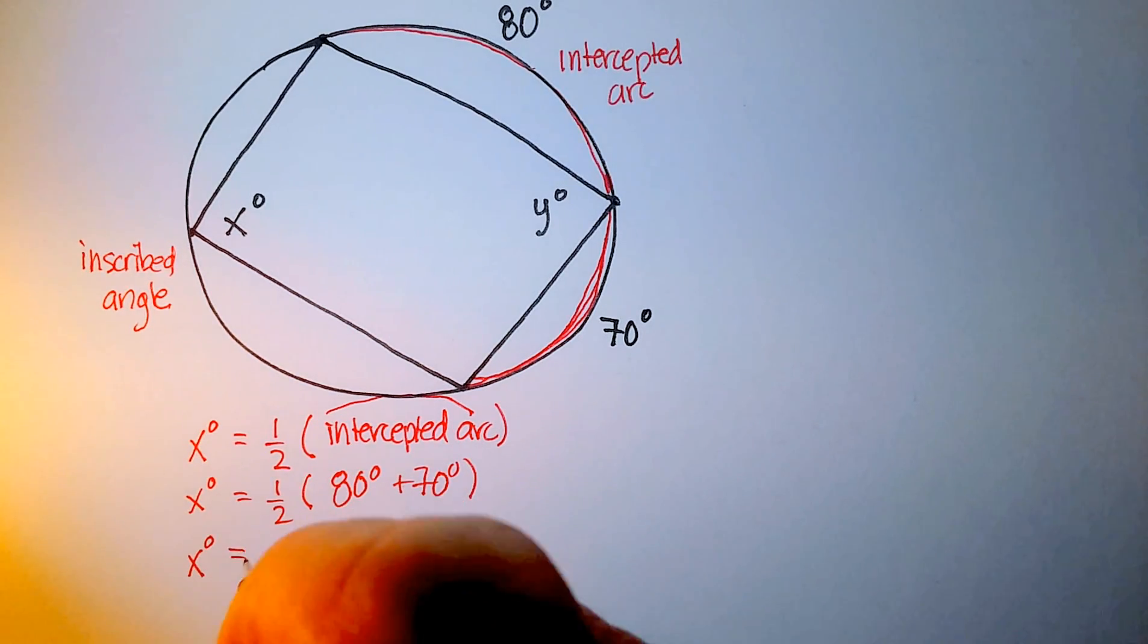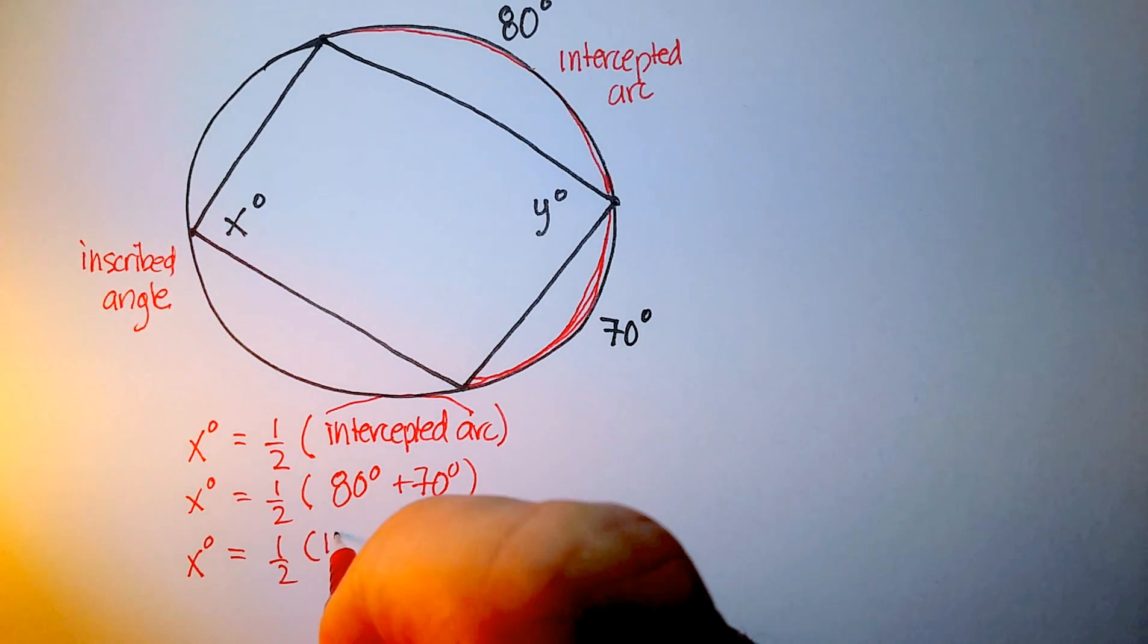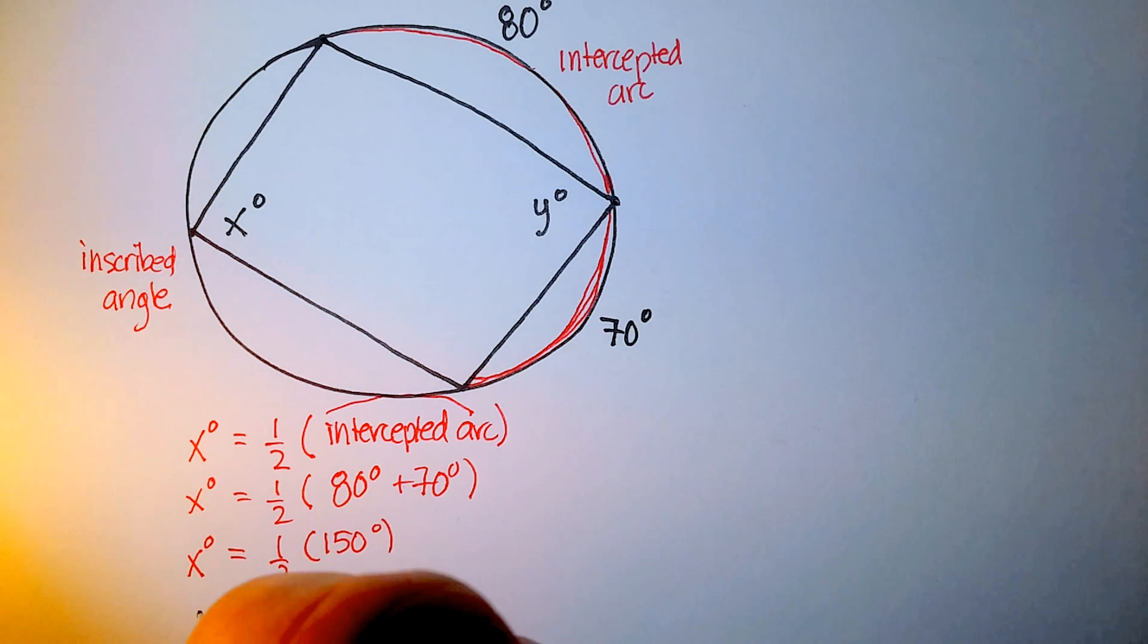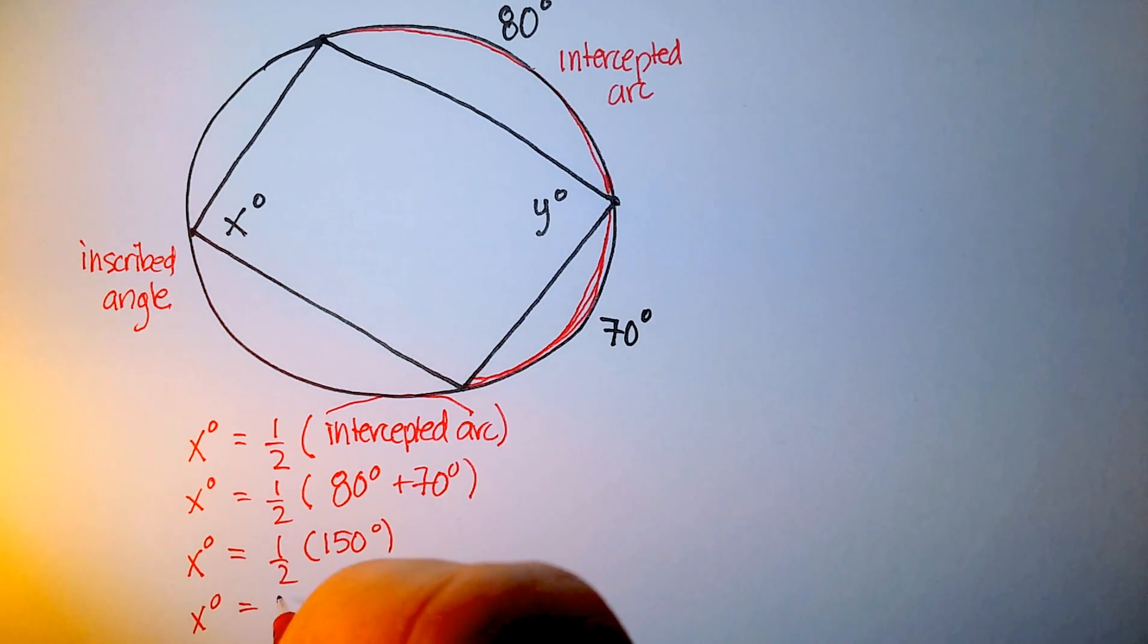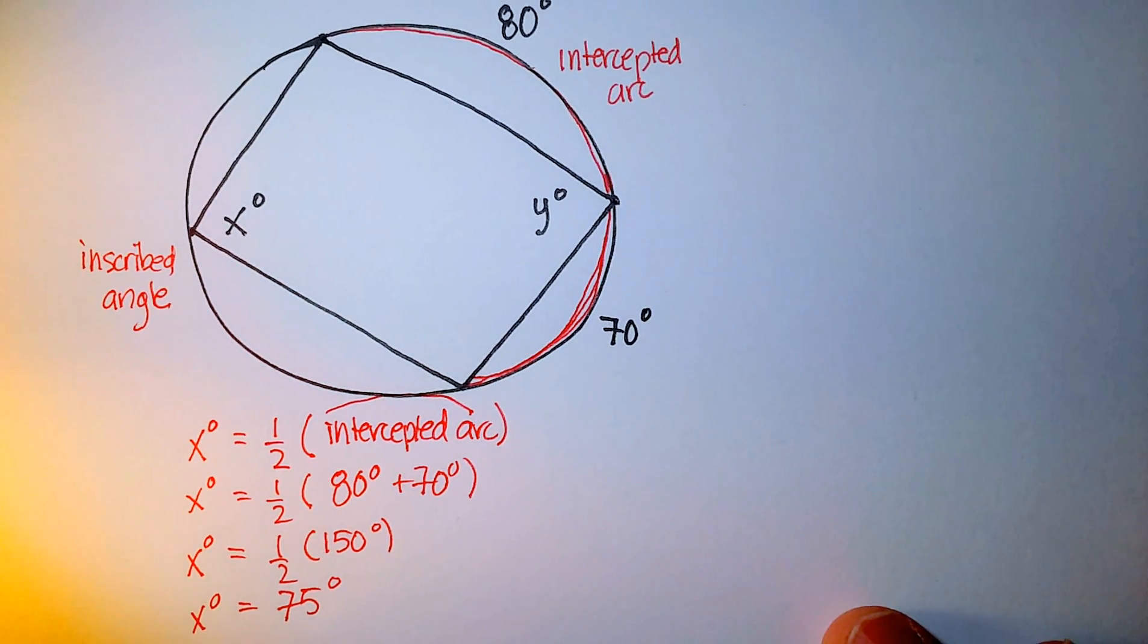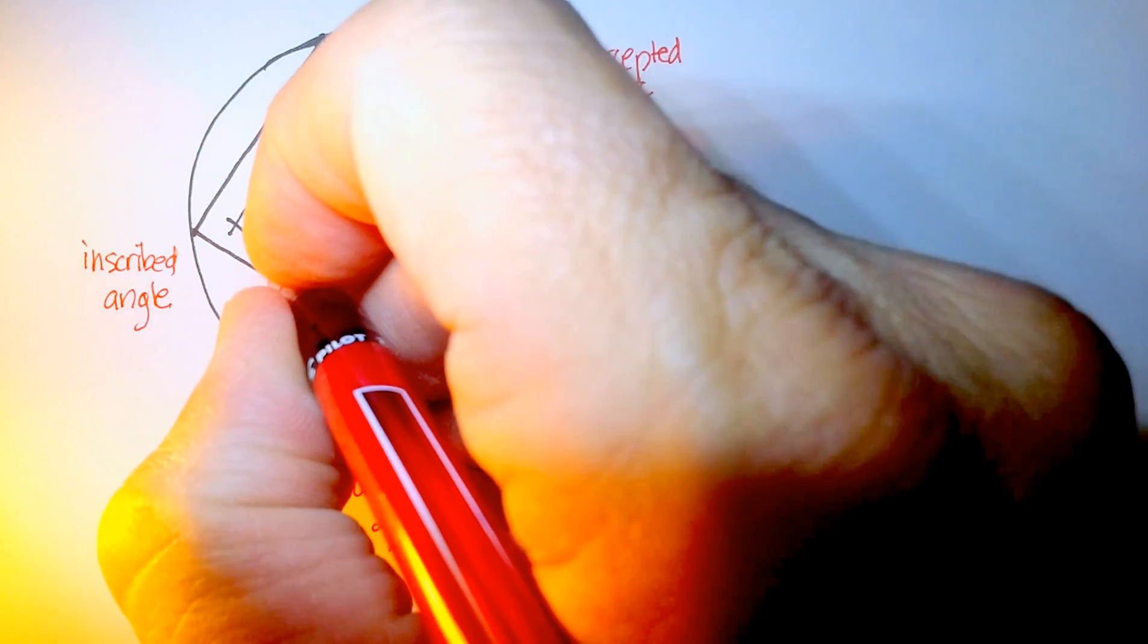So x is going to be equal to one half, 150, or x is going to be equal to 75 degrees. So now we found x as 75 degrees.